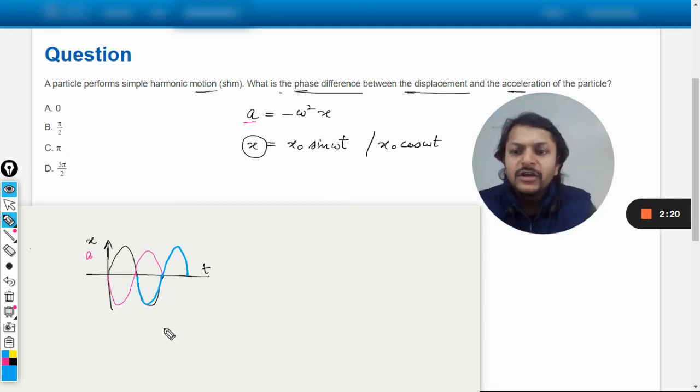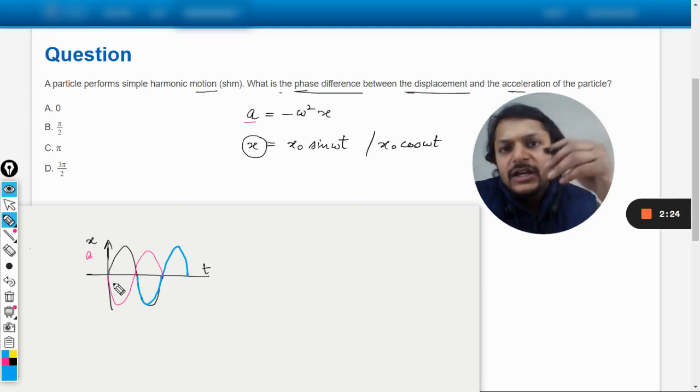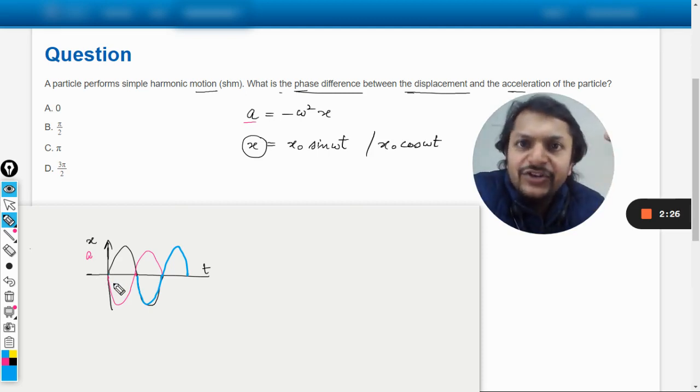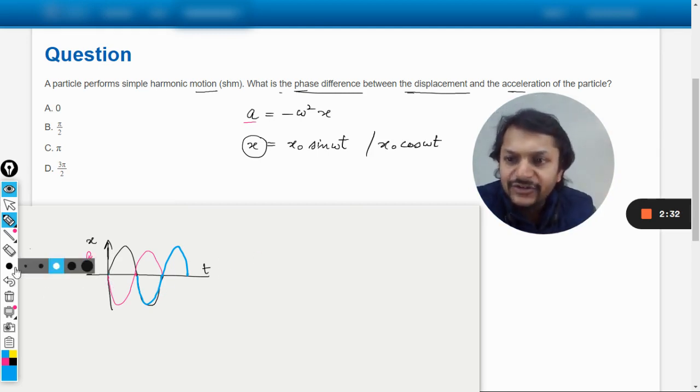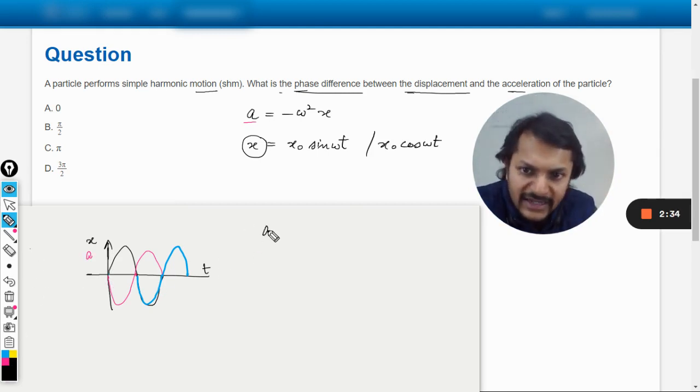Now it only means that you have just moved the blue color towards this. So it means that at t is equal to zero, the value of the acceleration is pi degrees ahead of the displacement.